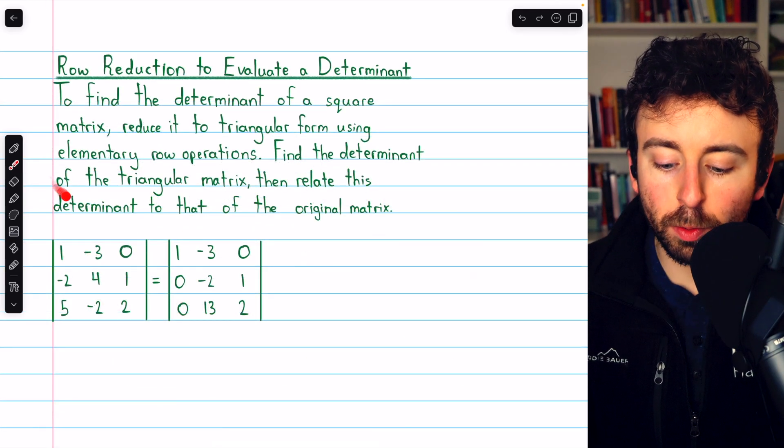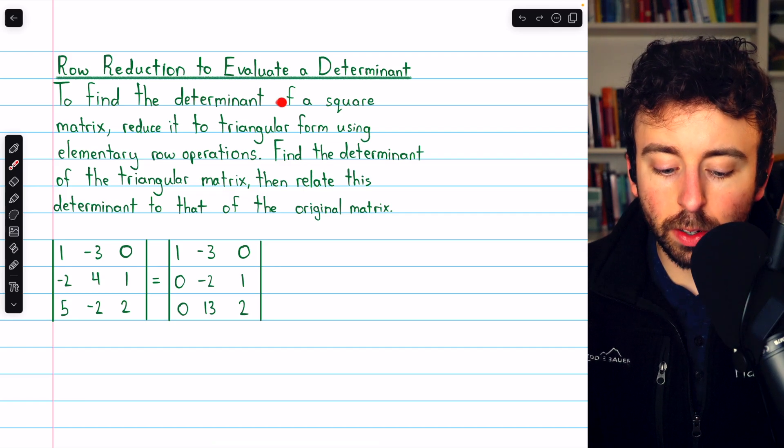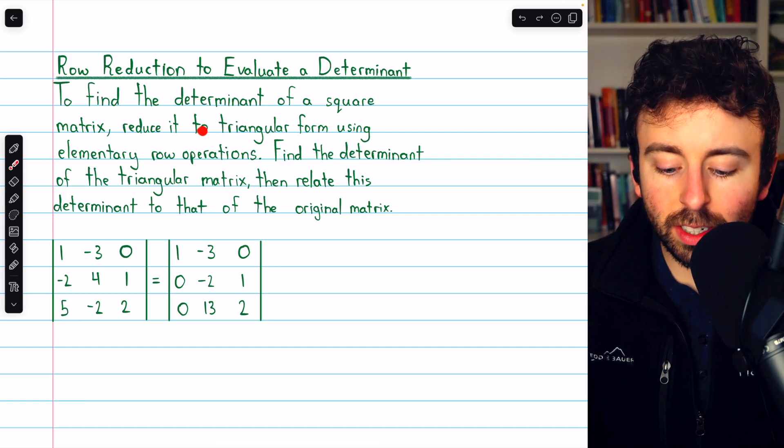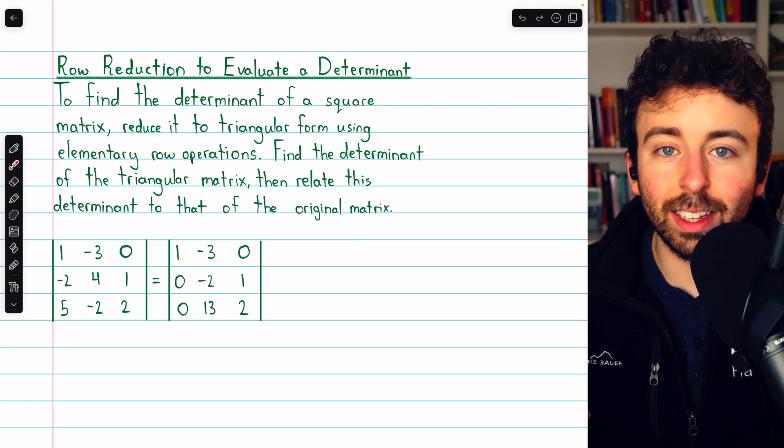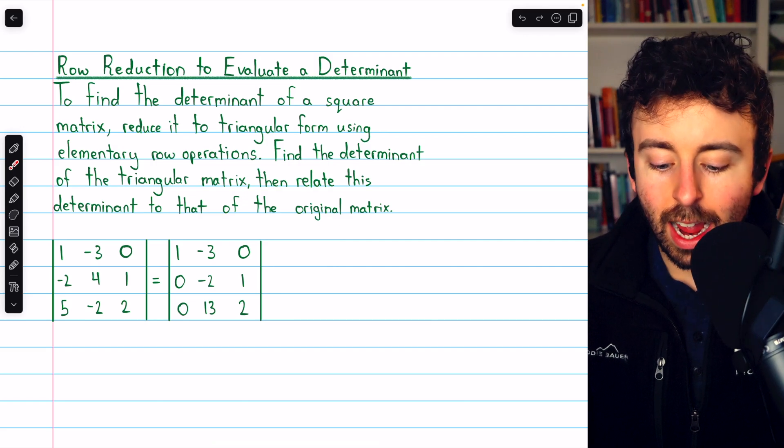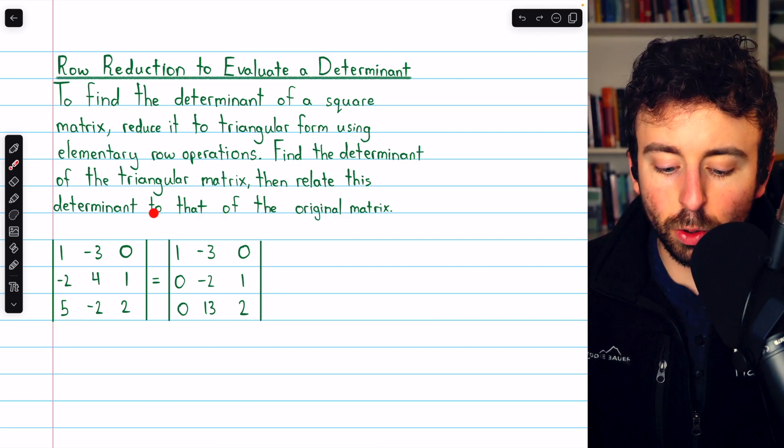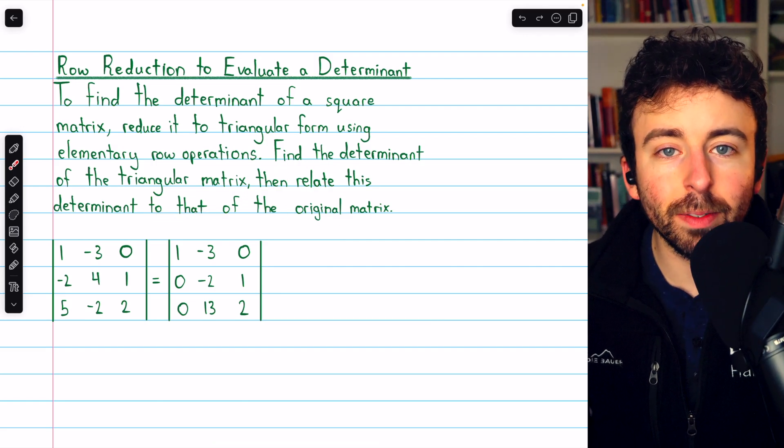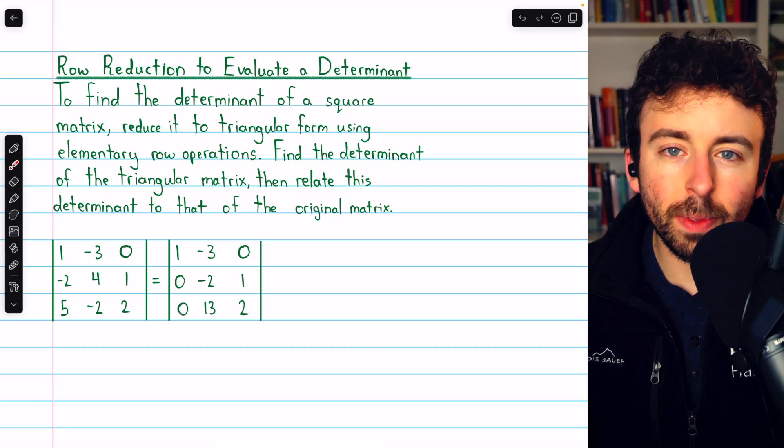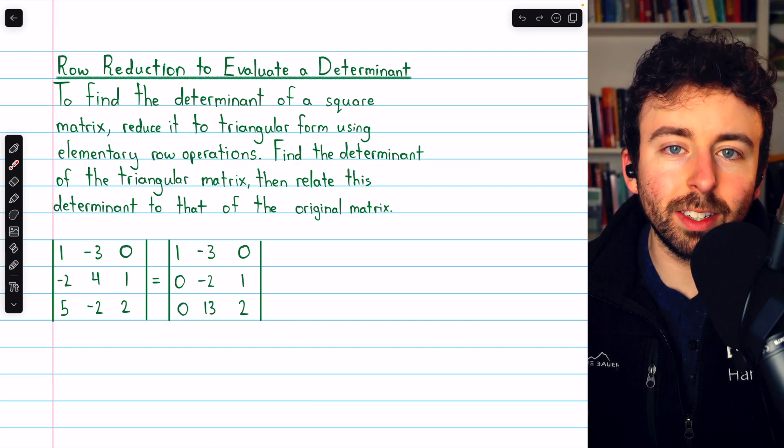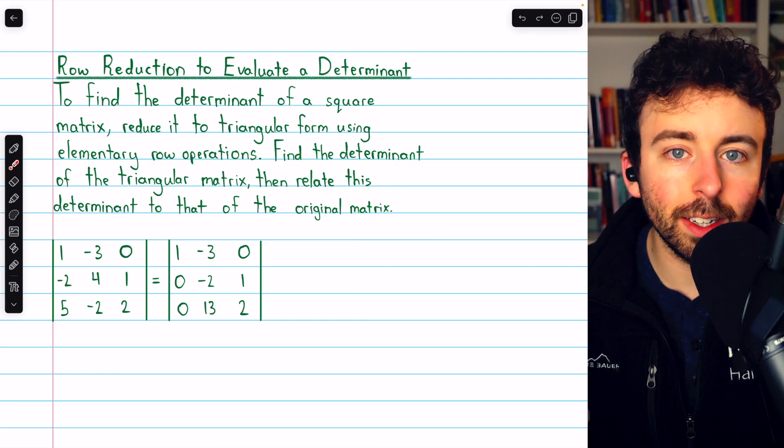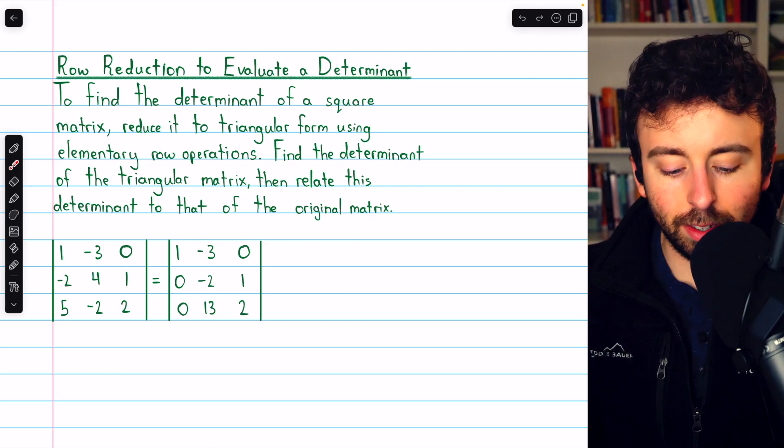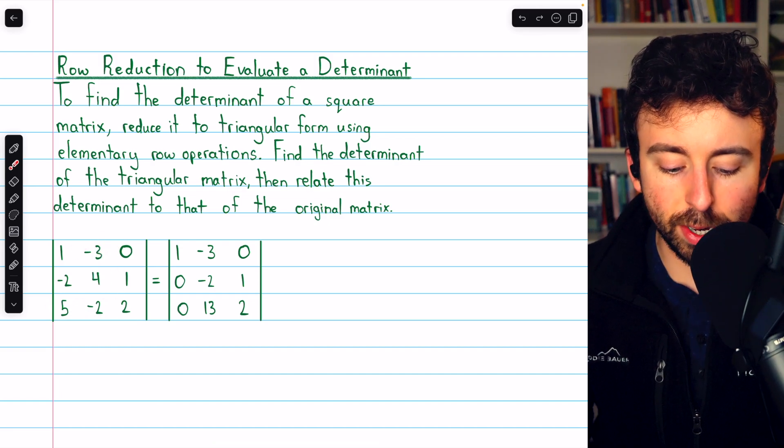Here's the idea I just described written out. To find the determinant of a square matrix, we can reduce it to triangular form using elementary row operations, and then find the determinant of the triangular matrix, which is very easy. That's just the product of the diagonals. And then we can relate that determinant to the determinant of the original matrix. This says triangular form, but occasionally we may reduce it to some other form that's not triangular but still has an easy-to-evaluate determinant. Let's go through three examples of doing this, beginning with this three-by-three determinant.